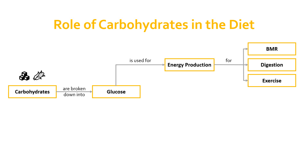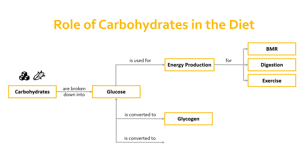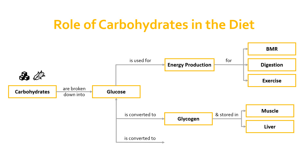Once glucose has met those energy demands, if we still have more glucose in the system because we've eaten more carbs than we needed, a couple of things happen to that excess glucose. First, it's converted to glycogen — the stored form of glucose. Glycogen is made by linking glucose molecules into longer chains, and it's stored in two main places: muscle glycogen and liver glycogen.